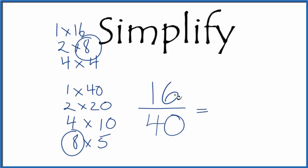So let's divide 16 by 8, that's 2. And then we can divide 40 by 8, that gives us 5.